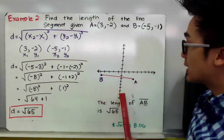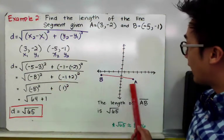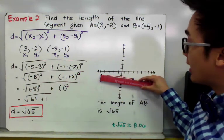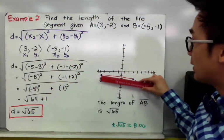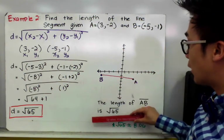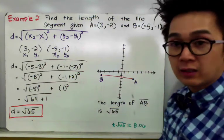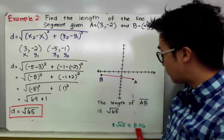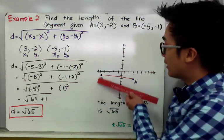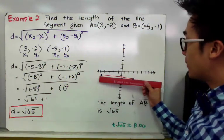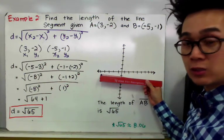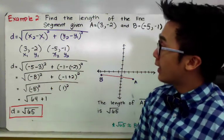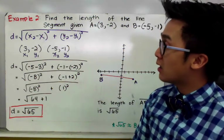If we show line segment AB on our graph, this is point A and this is point B. Connecting these two points gives us the line segment. According to our formula, the distance between A and B measures the square root of 65, which is approximately 8.06 units using a calculator. This is how we use the distance formula in finding the length or the distance between two points.